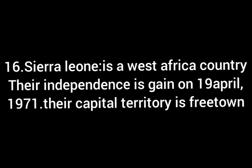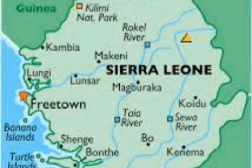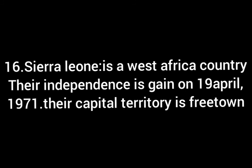Number 16, Sierra Leone. The name of the president is Julius Maada Bio. This is their currency and map and flag. Their independence was gained on 19th April, 1971. Their capital territory is Freetown.